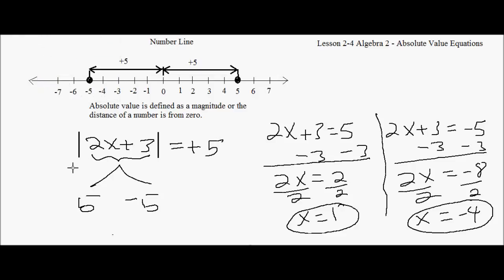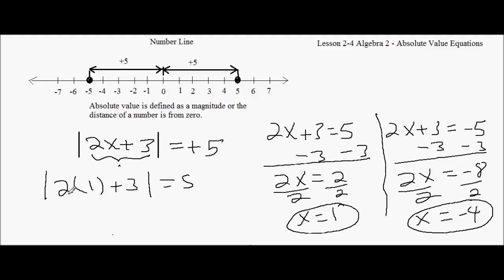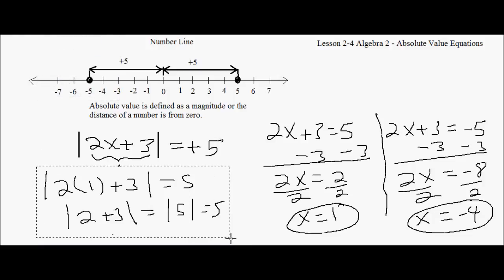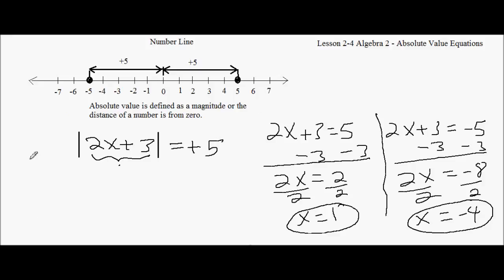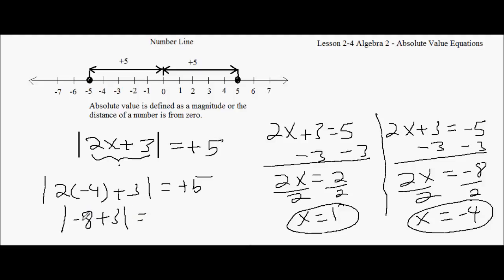Let's check these answers. For x equals 1: the absolute value of 2 times 1 plus 3 — that's the absolute value of 5 — equals 5. That works. For x equals negative 4: the absolute value of 2 times negative 4 plus 3 is the absolute value of negative 8 plus 3, which is the absolute value of negative 5, and that equals 5. Both answers are correct.